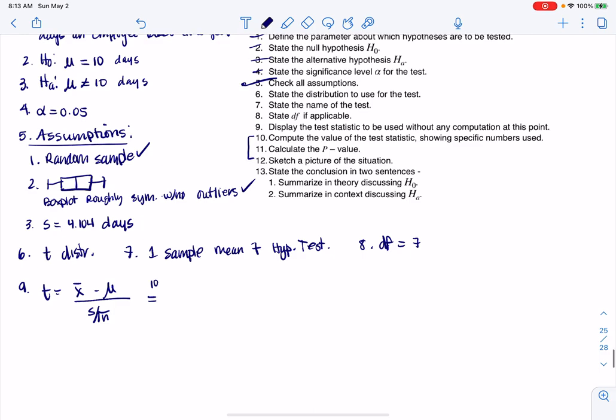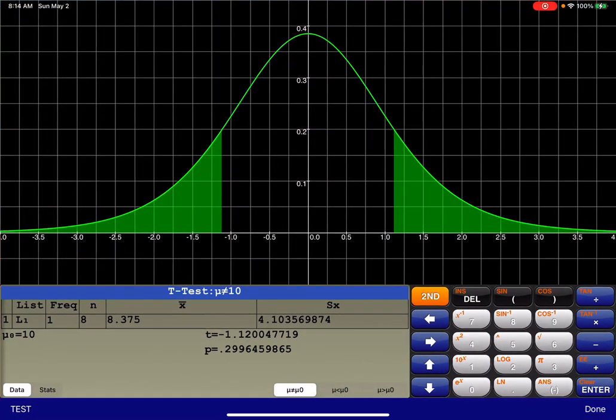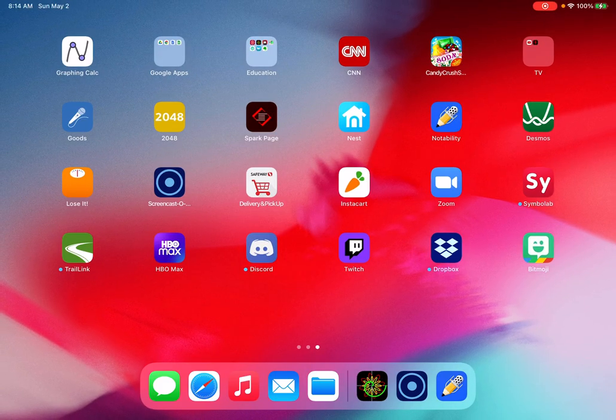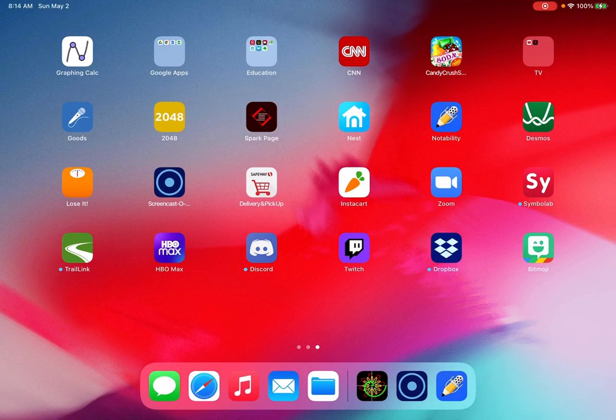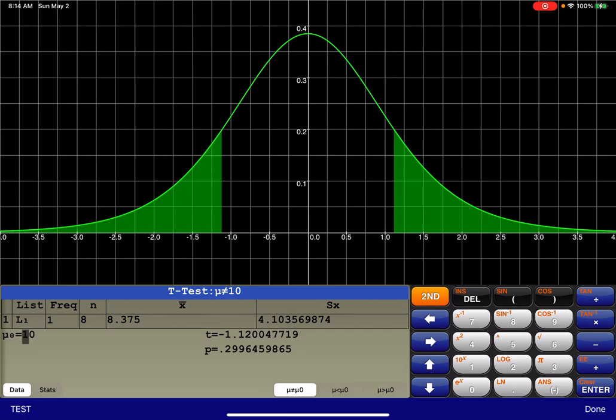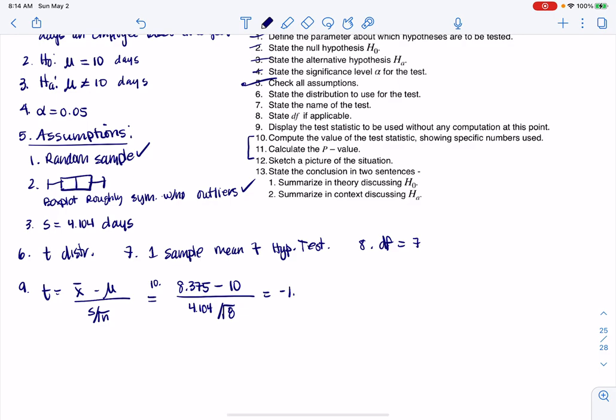Step 10 is to fill this in with our particular numbers. I'm going to go back to my calculator and find out what x bar was. It looks like x bar was 8.375. So I have 8.375 minus my sample mean of 10. My sample standard deviation we knew was 4.104, and my sample size was 8. And when I crunched that number, I'm going to go back to my calculator. It said that test statistic was negative 1.12.